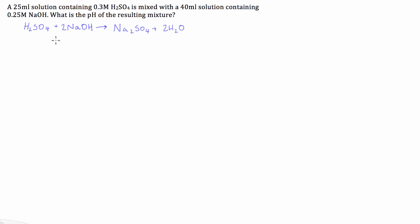So I'm not including any of the states or any of the ions. I'm purely doing this so I can see the ratio of sulphuric acid to sodium hydroxide. So we can see here that the ratio of H2SO4 to NaOH is 1 is to 2.